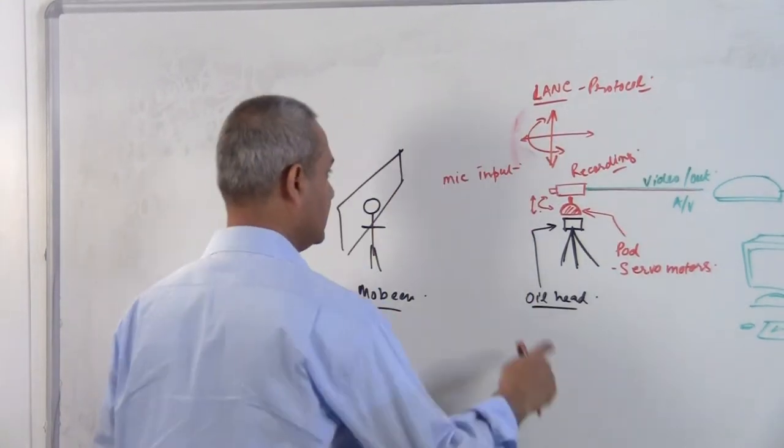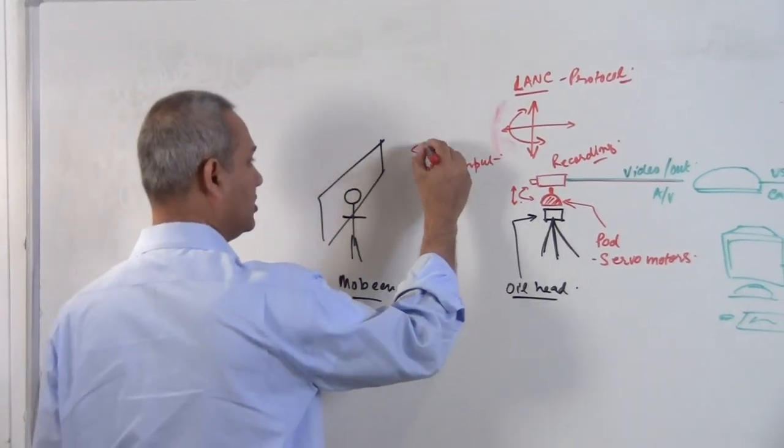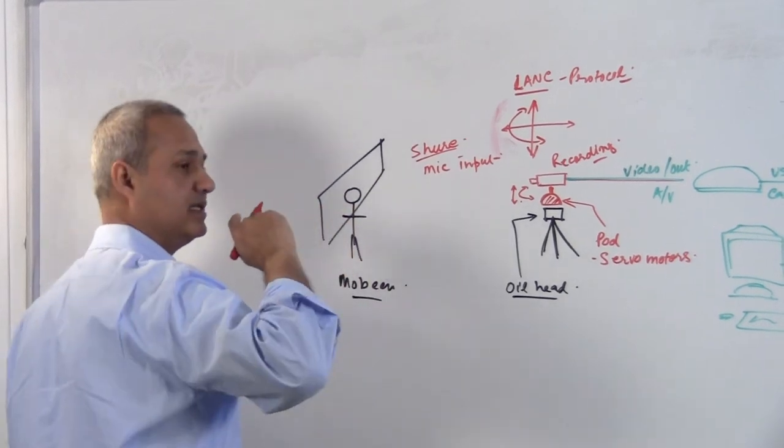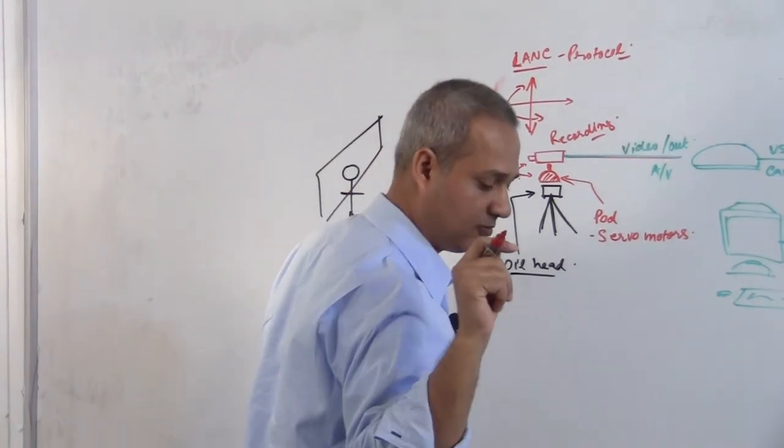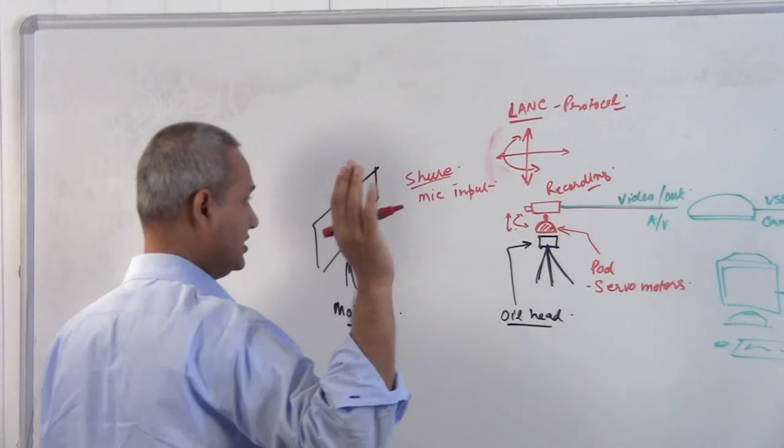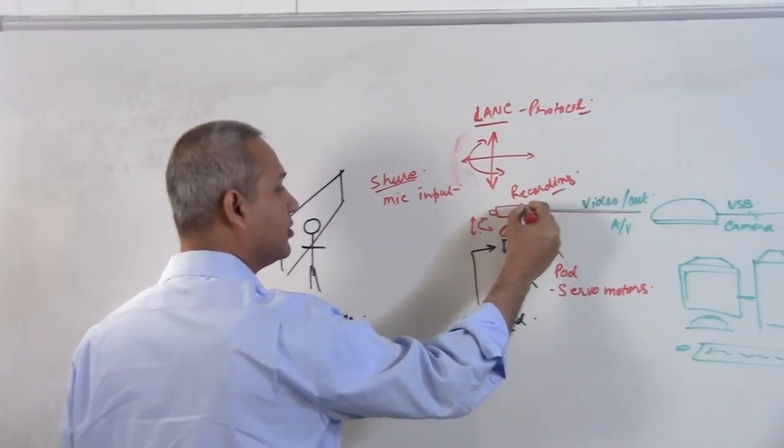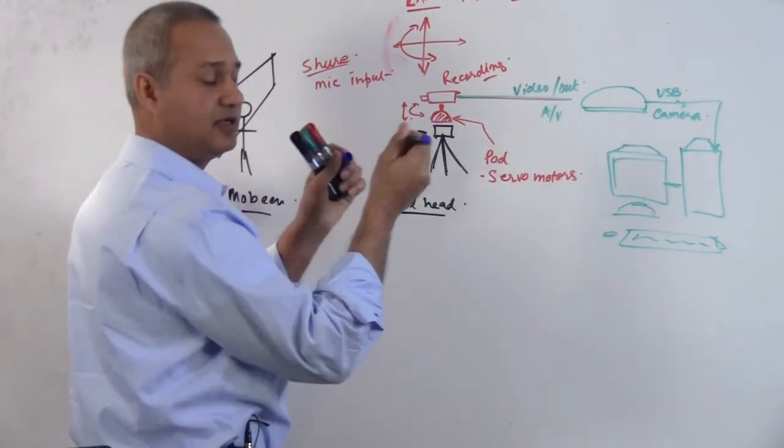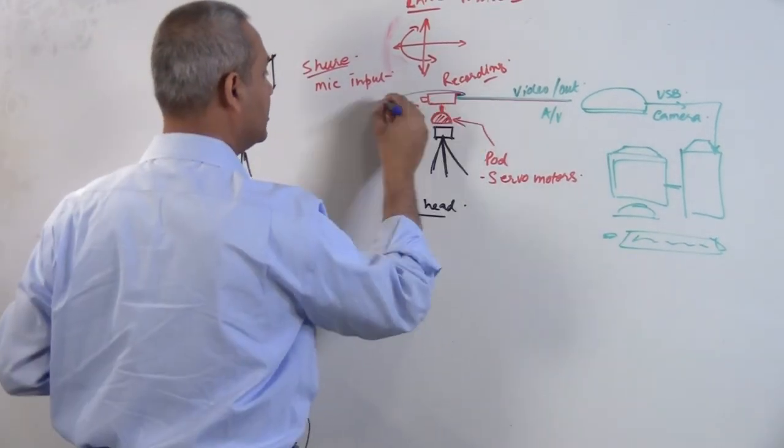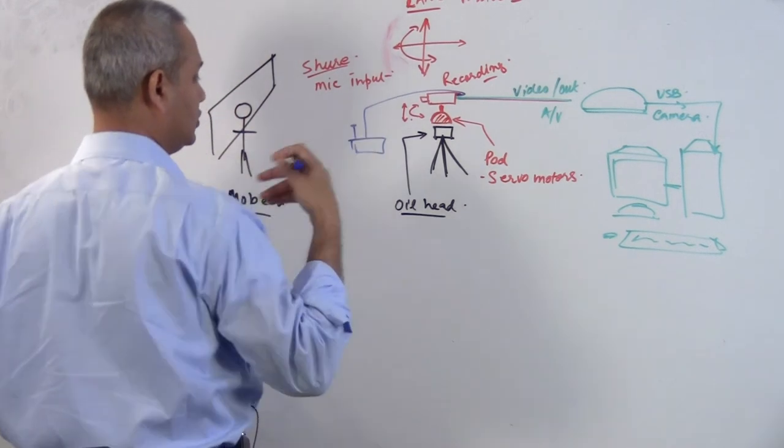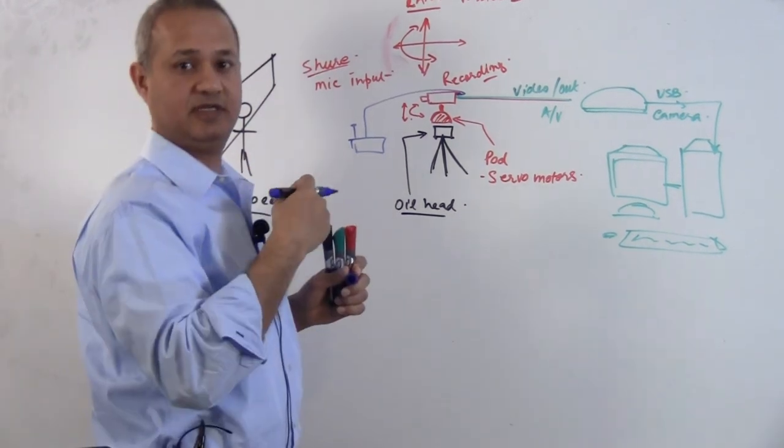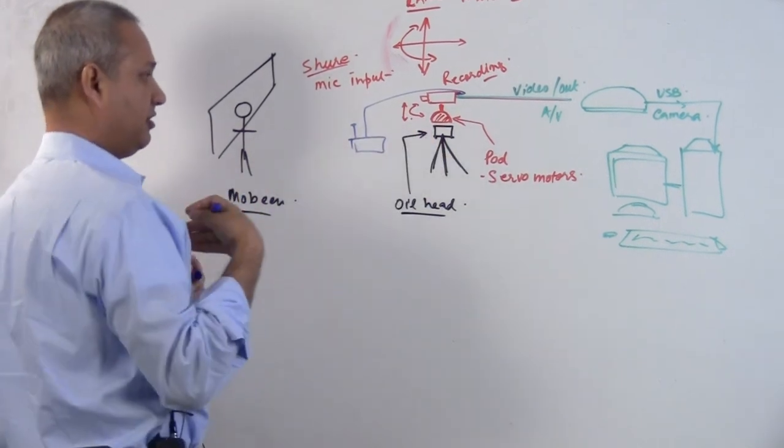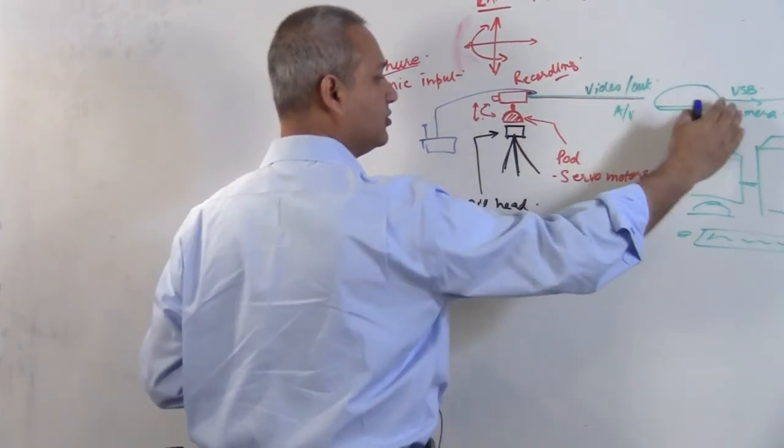The system I have is Shure wireless audio. The camera has a mic input connected to a Shure receiver which is receiving signals from here. The audio is going from here, and the video is going into the computer.